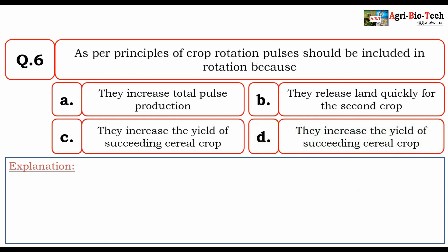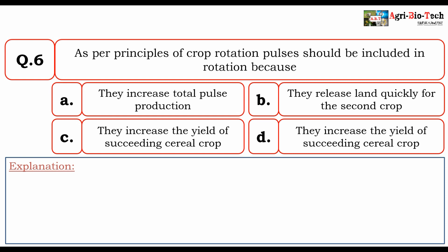Next question: As per principles of crop rotation, pulses should be included in rotation because? The options are A. They increase total pulse production, B. They release land quickly for the second crop, C. They increase the yield of succeeding cereal crop. The correct option is C. They increase the yield of succeeding cereal crop.